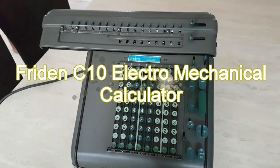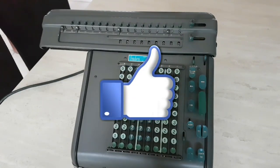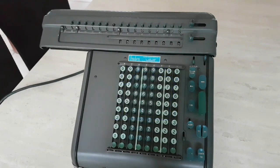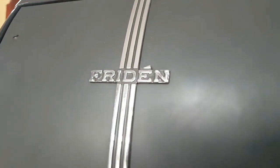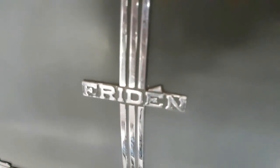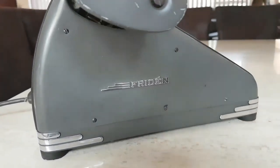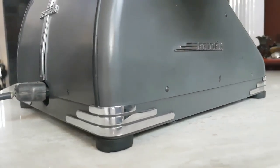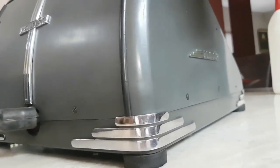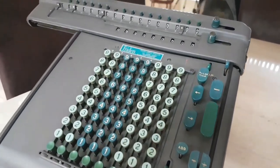A Frieden C10 calculating machine from the mid-1930s. A wonderful Art Deco designed calculator. Glorious Art Deco chrome trim on the corners, the logos on the side and the back. Absolutely beautiful.